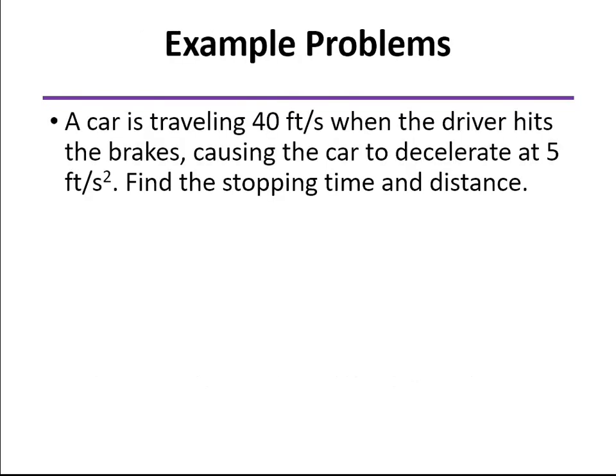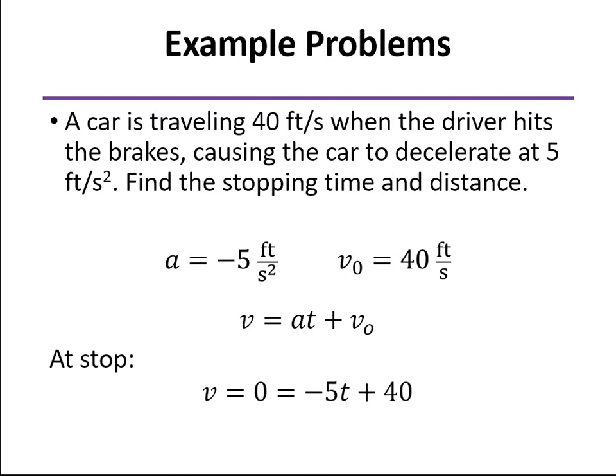So here's one with constant acceleration. We know we're going 40 feet per second. Hit the brakes and decelerates at a constant rate of 5 feet per second squared. Deceleration just means a negative acceleration. Initial velocity being 40 feet per second. We can just plug into our equation that we came up with earlier. We know that when we stop, the velocity is equal to zero. And so from that, we can solve for the stopping time, which is going to be eight seconds.